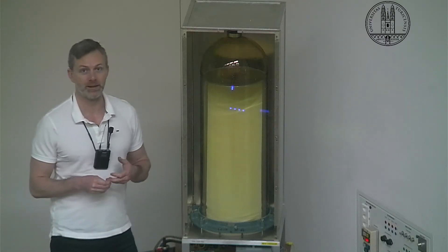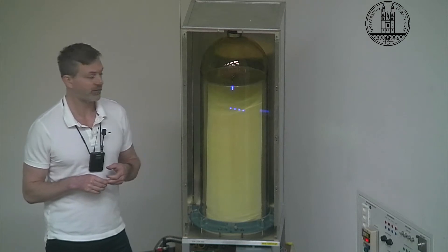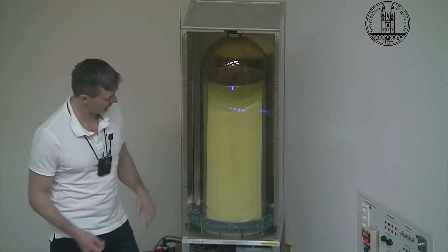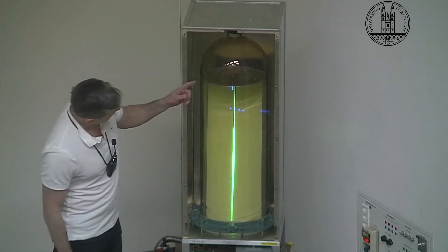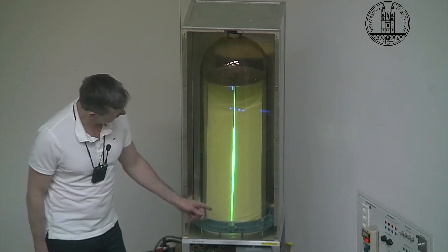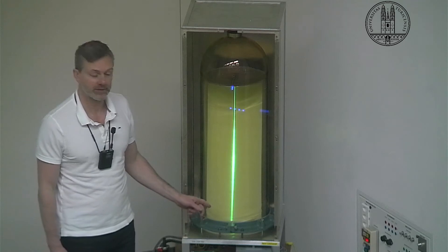Today we're going to bend a beam of charged particles. So first we need a beam of particles. Let's turn this on. Here we have electrons hitting a phosphorescent screen so we can see them.